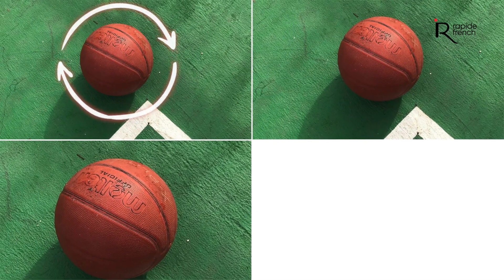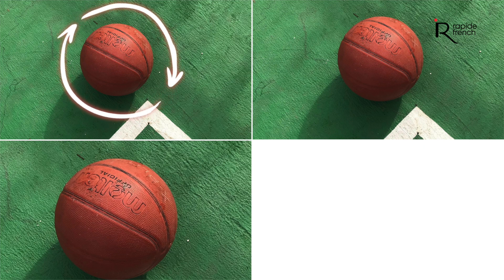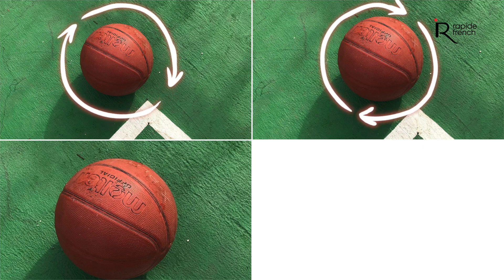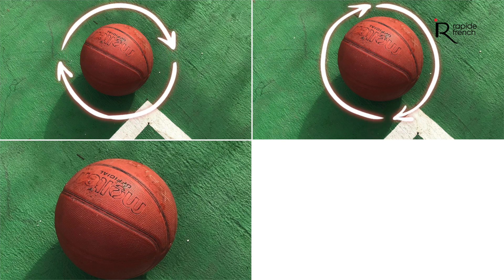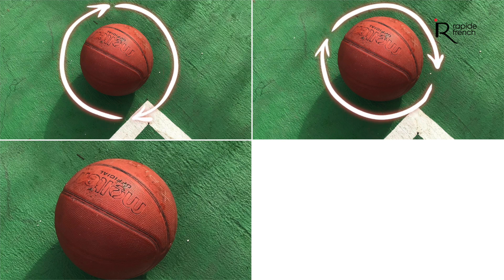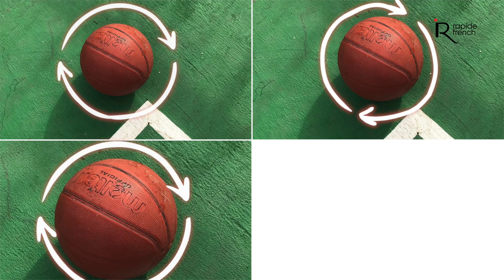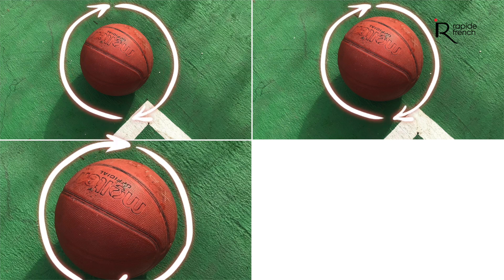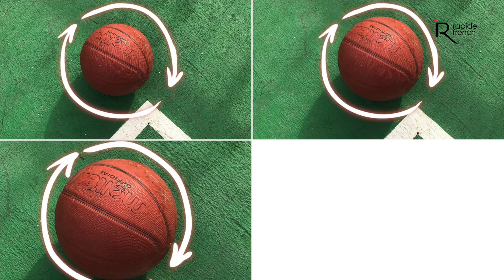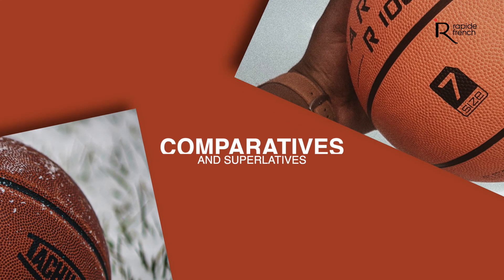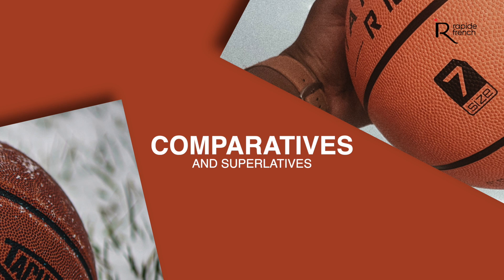Look at this ball right here — the ball on the left and the other ball on the right. Which is bigger? Now among these three balls, which one is the biggest? So 'bigger' and 'biggest' — these expressions are known as comparatives and superlatives in the English language.